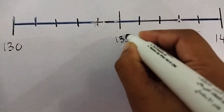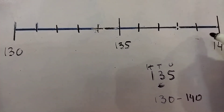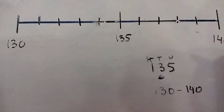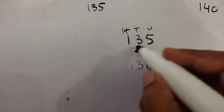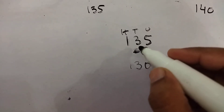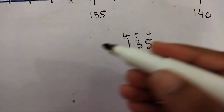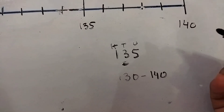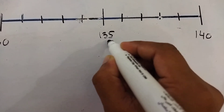On the number line: 131, 132, 133, 134, 135, 136, 137, 138, 139, 140. So 135 lies between 130 and 140. We are talking about the tens place, and the last digit is 5. Remember the general rule: since the last digit is 5, we round up. So 135 is rounded off to 140.